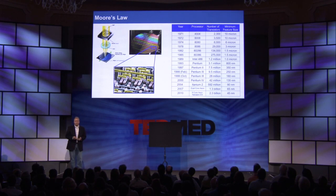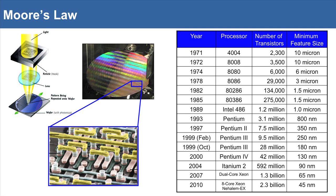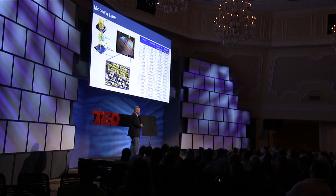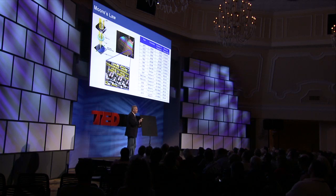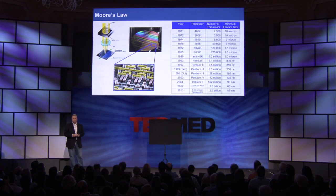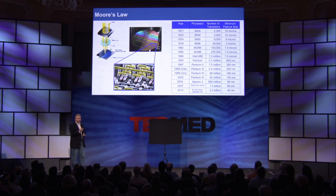We heard a lot about Moore's Law — one definition being the doubling of the number of transistors every 18 months. A computer chip hasn't changed very much in size over the years, but the transistors got a lot smaller. Forty years ago, the minimum feature size was about 10 microns — the size of a single cell. Today, the minimum feature size is down around the size of a virus particle. So in 40 years, Moore's Law has gone from the size of a single cell down to the size of a virus particle.